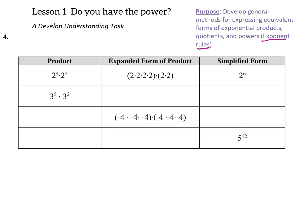For example, we have a product in problem 4: 2 to the 4th power times 2 squared. We know that 2 to the 4th power means 2 multiplied by itself 4 times, and 2 squared means 2 times itself. So, combining that all together, our most simplified form would be 2 to the 6th power.